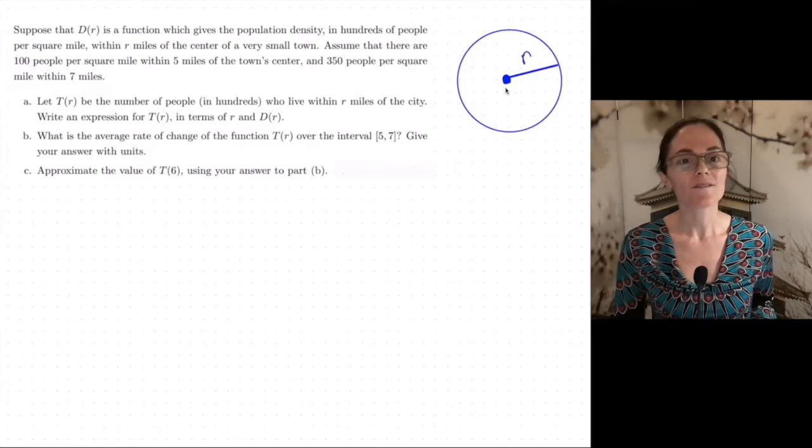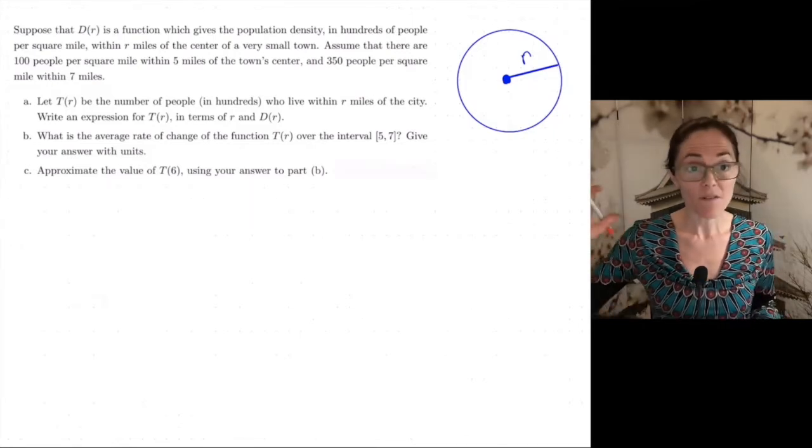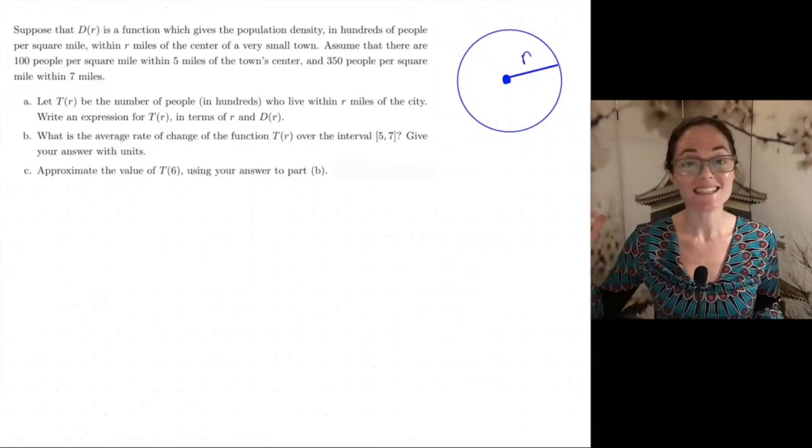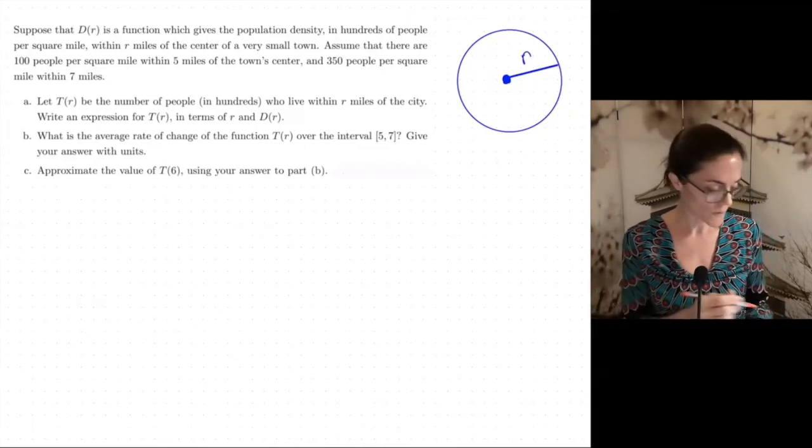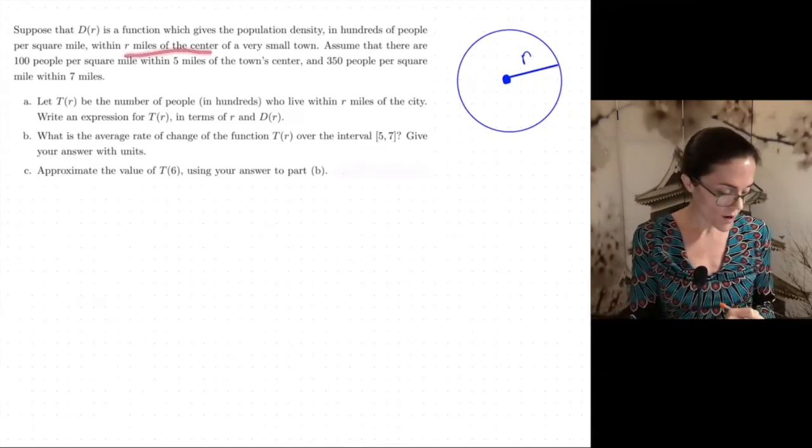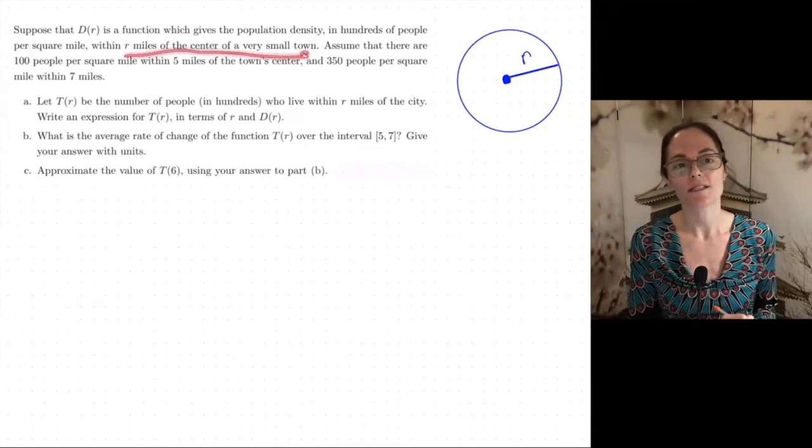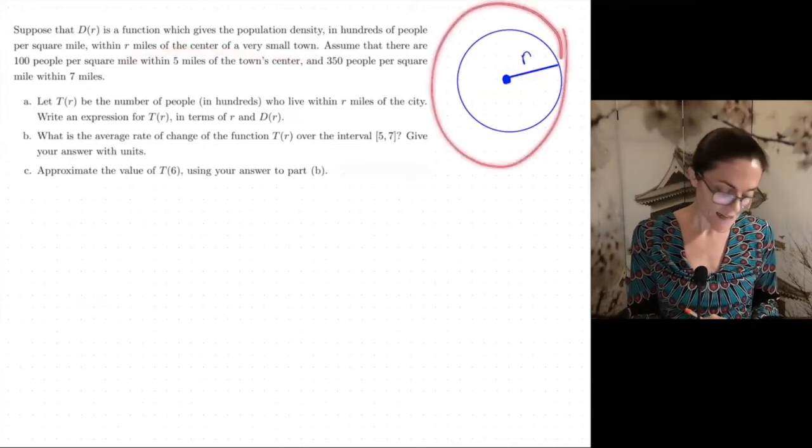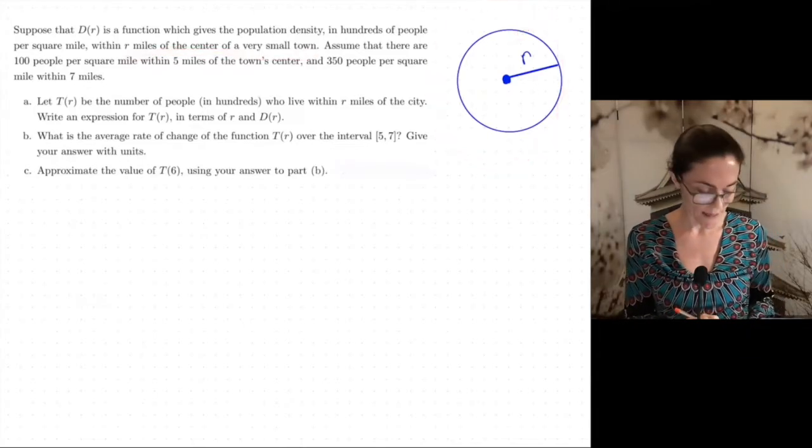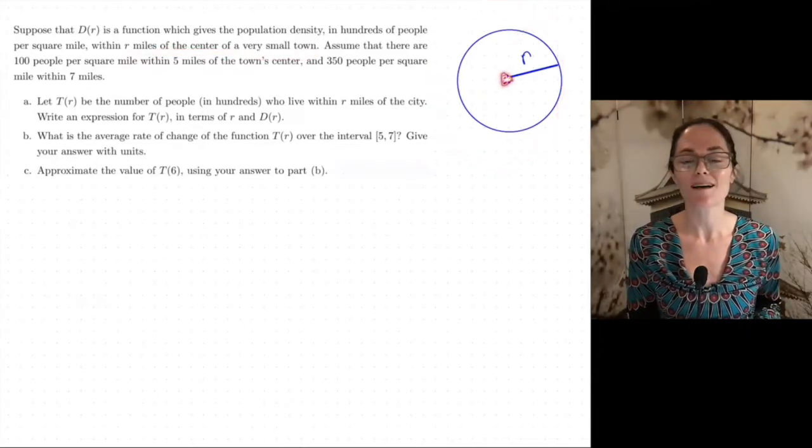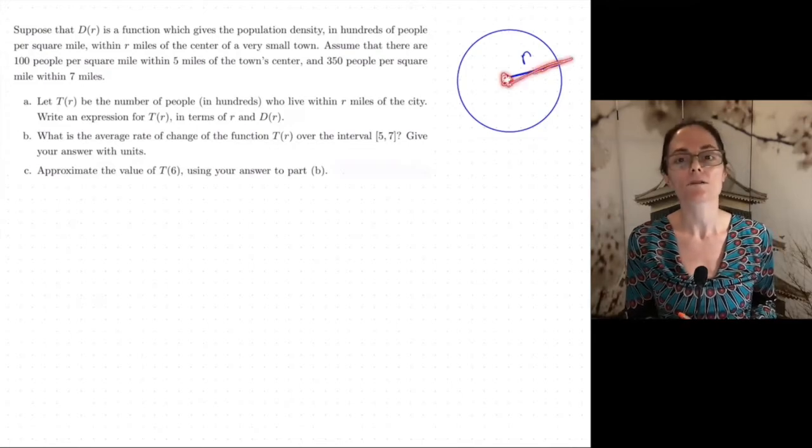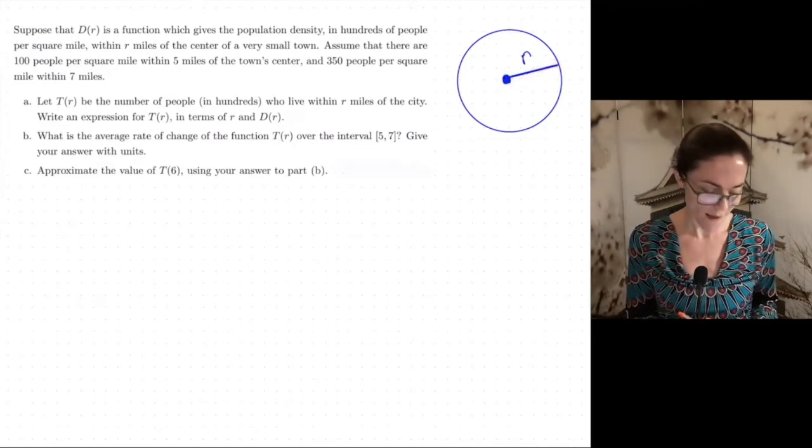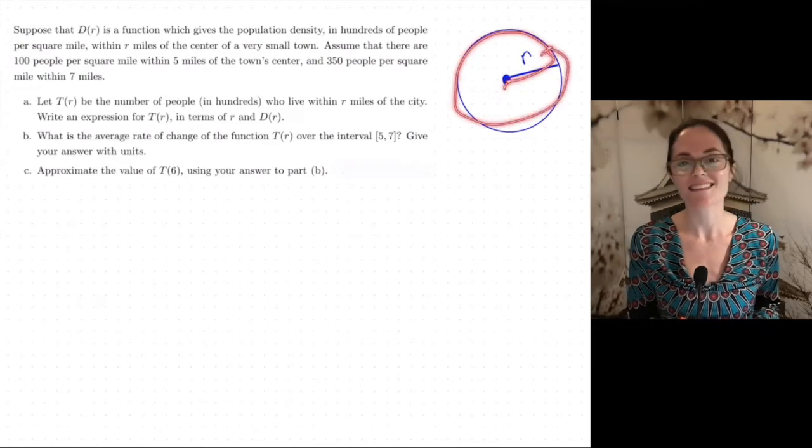We have this function D(r), which gives population density in hundreds of people per square mile when we are within r miles of the center of a town. So I just started by sketching what this would look like. This is the center of the town. And if you live within r miles of the center, you live somewhere in this circle.